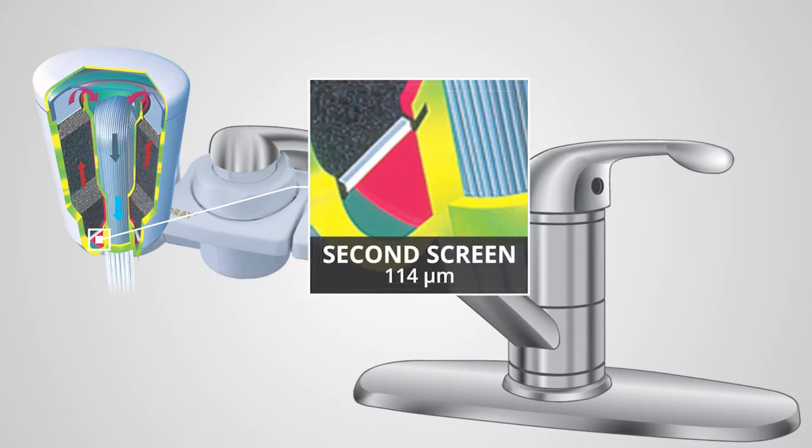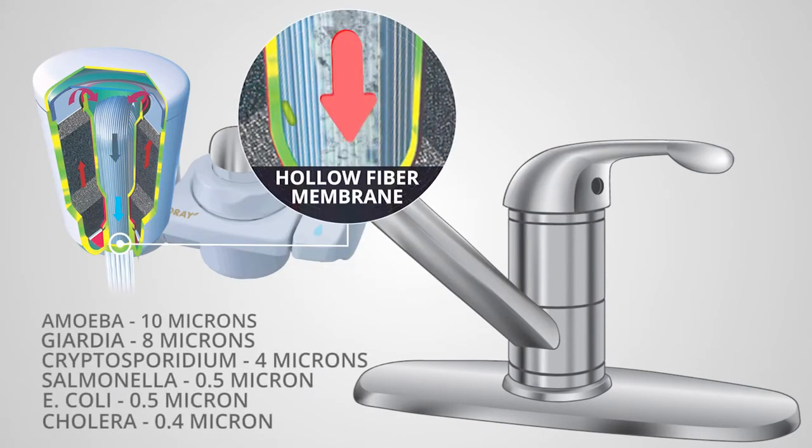Then a second screen to trap those that made it through the prescreen. The hollow fiber membrane filter finally removes anything larger than 0.1 micron.